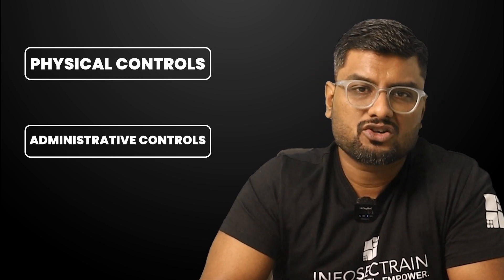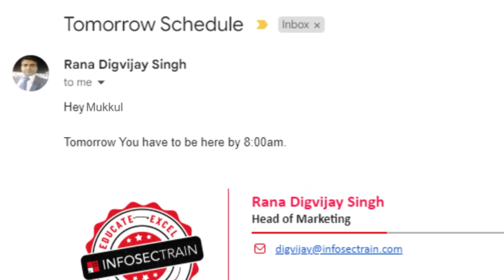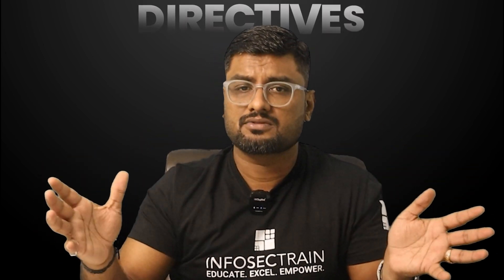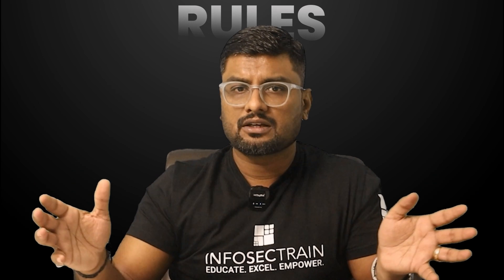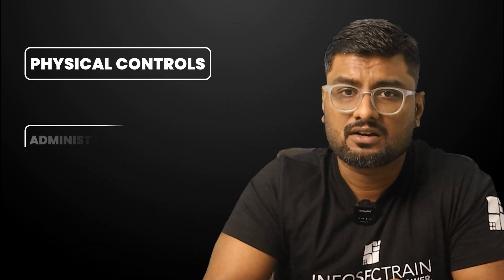The second type is called administrative control. For example, when a manager sends an email saying employees must arrive by 8 o'clock — that's an instruction given to employees. It's a rule or directive set for the company. This is called an administrative control.